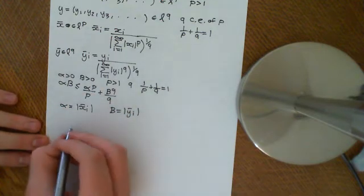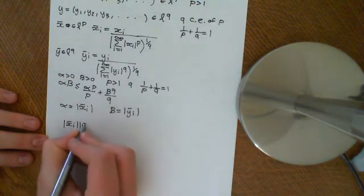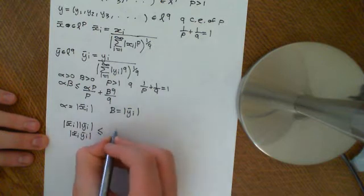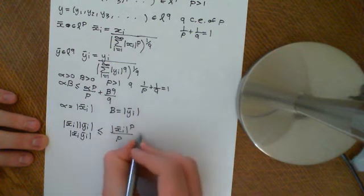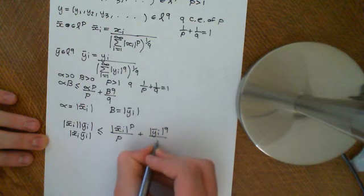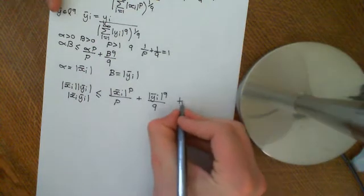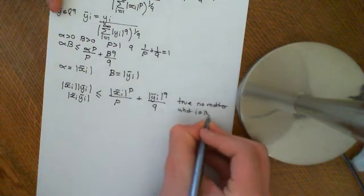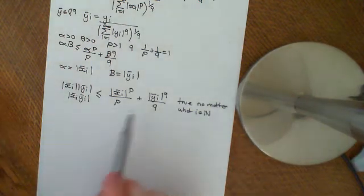Applying Young's inequality to these two values, we get that |x̄ᵢ| times |ȳᵢ|, which equals |x̄ᵢ · ȳᵢ|, is less than or equal to |x̄ᵢ|^P over P plus |ȳᵢ|^Q over Q. This is true for all i in the natural numbers — it doesn't matter which one you pick.